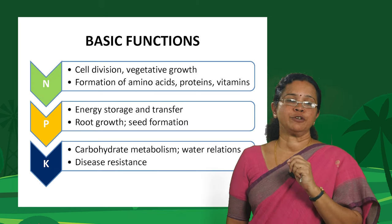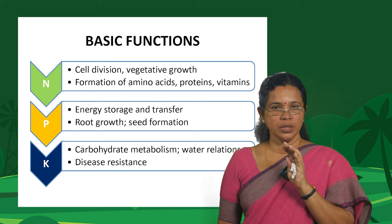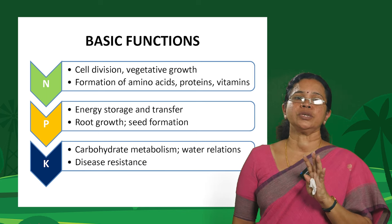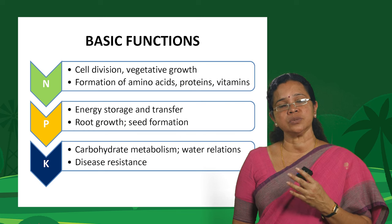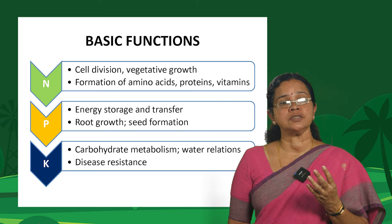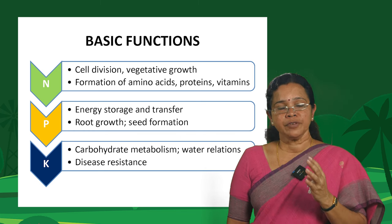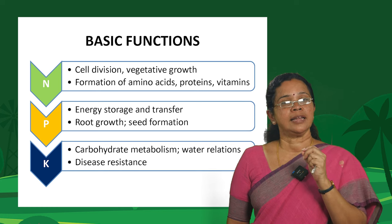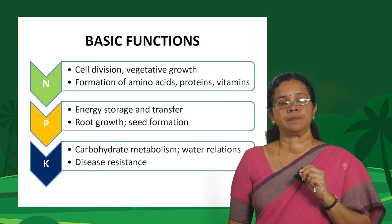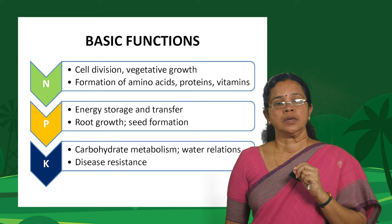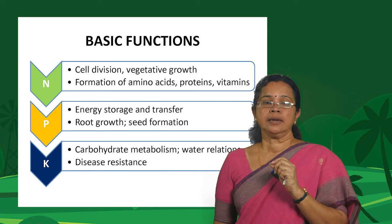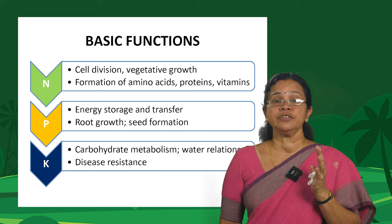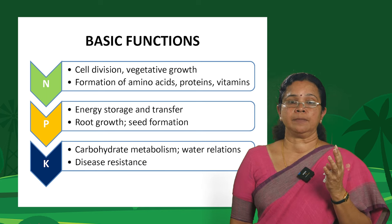Now let us see the basic functions of these nutrients. Every nutrient has a very critical role to play in the life cycle of a plant. In the case of nitrogen, it is all about cell division and vegetative growth — the greenness of the plant, the leaves, stems and branches all have something to do with nitrogen.